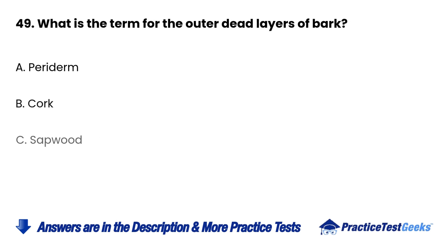Question 49: What is the term for the outer dead layers of bark? a. Periderm. b. Cork. c. Sapwood. d. Heartwood.